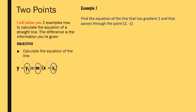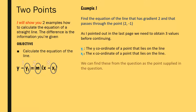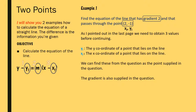I'm going to put that equation in the bottom left and take you through the first example: find the equation of the line that has gradient 2 and passes through the point (2, -1). We need to obtain three values. The point (2, -1) gives us the x and y coordinates of a point on the line, so x1 equals 2 and y1 equals minus 1. The gradient is also supplied, so m equals 2.